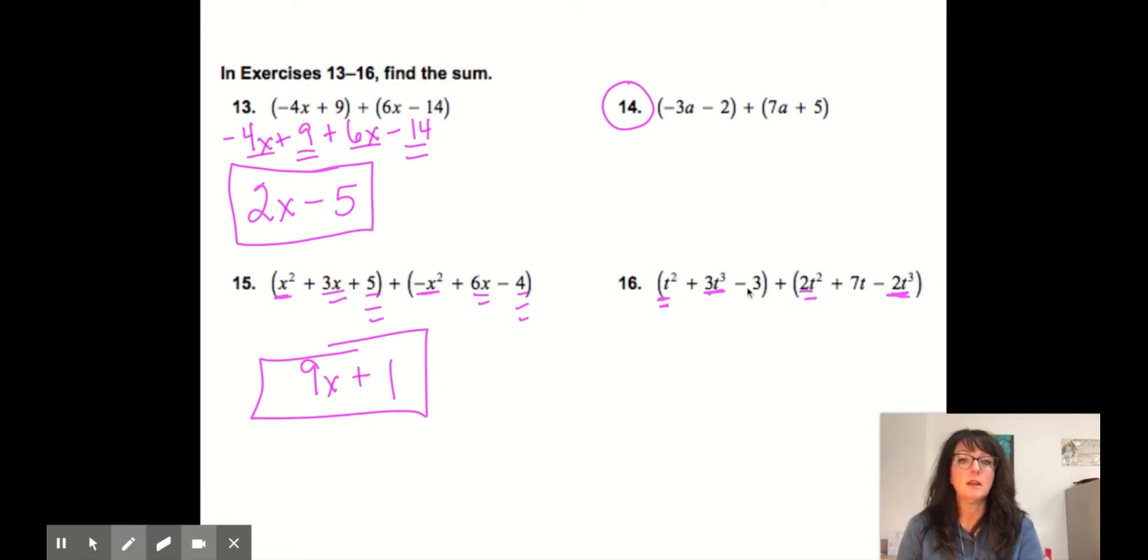So my t cubed goes first. Then t squared would be my second term. Oh, here's a t squared as well. There is no t, but there is a t here that will go third. And then finally, the constant, I underline it four times.